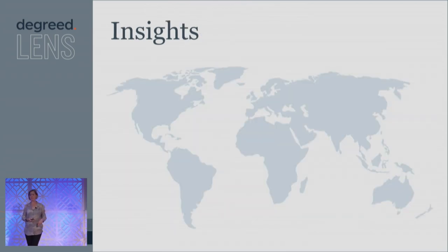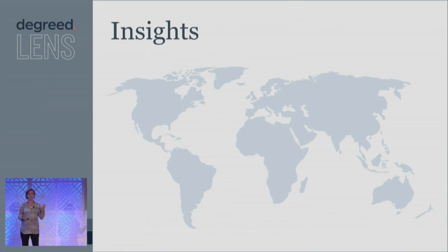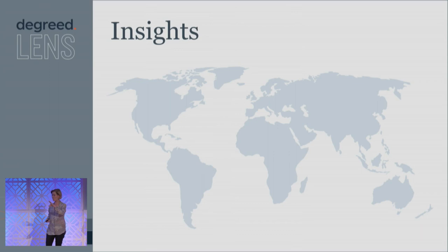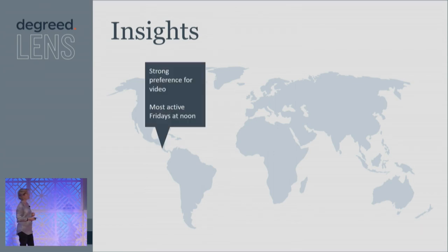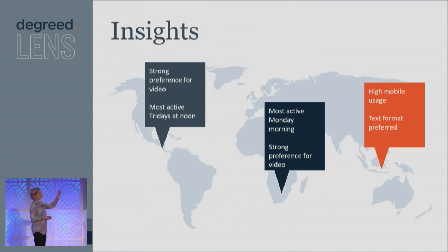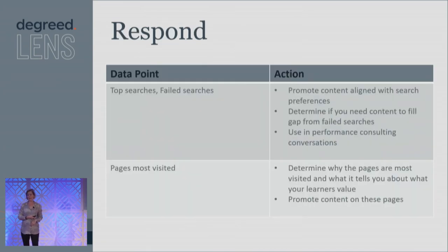Then what I do with it is start coming up with some insights. I work at a global company — we predominantly have a footprint in Latin America — and I start to find out some interesting things, because insights in the data showed actual differences between geographies. For example, if I put a video in English and the exact same video in Spanish, I will have three times the viewers in Spanish, even though my audience is not proportionally three times more Hispanic or Spanish-speaking. I don't know why that is, but it also means that I push out a lot of video in Spanish. Strong preference for video, most active Fridays at noon, most active Monday morning, strong preference for video again — and I start seeing high mobile usage, text format preferred. So I start seeing these things and I can start developing a heat map to make me think about what type of content I want to be putting out.